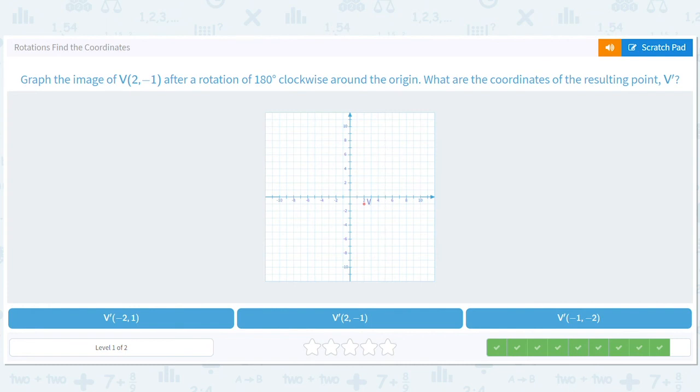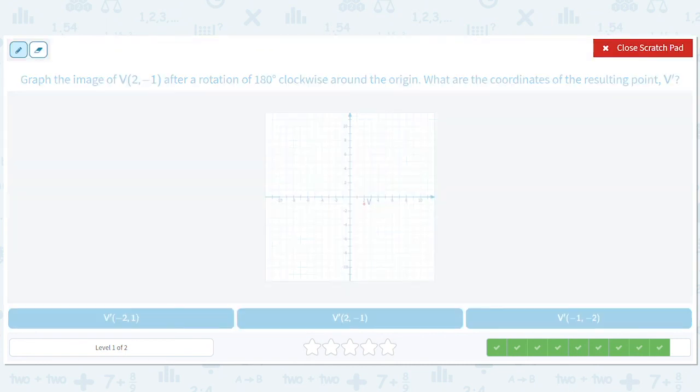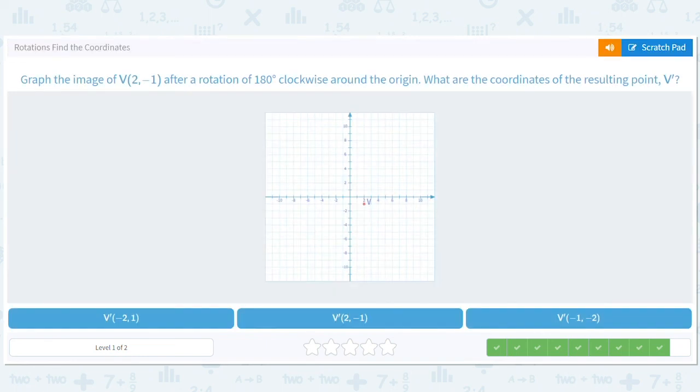And 2, negative 1 after a rotation of 180 degrees clockwise, so now we're going like that. 2, negative 1 will go to negative 2, 1.